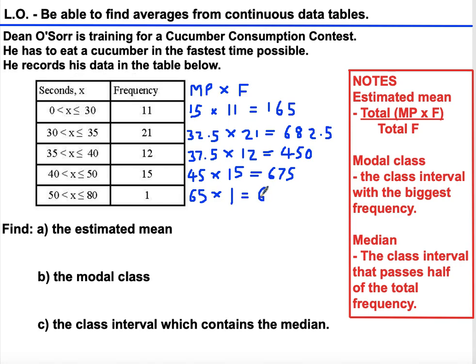As it says on the right, estimated mean is total midpoint times frequency divided by total frequency. We need to add this up. The total midpoint times frequency is 2037.5. We also need the total frequency, which is 60. I'll note how I got some of those midpoints: I added 30 and 35, that was 65, divided by 2 is 32.5. I added 35 and 40, that was 75 divided by 2 is 37.5. Similarly, 40 and 50 divided by 2 is 45.